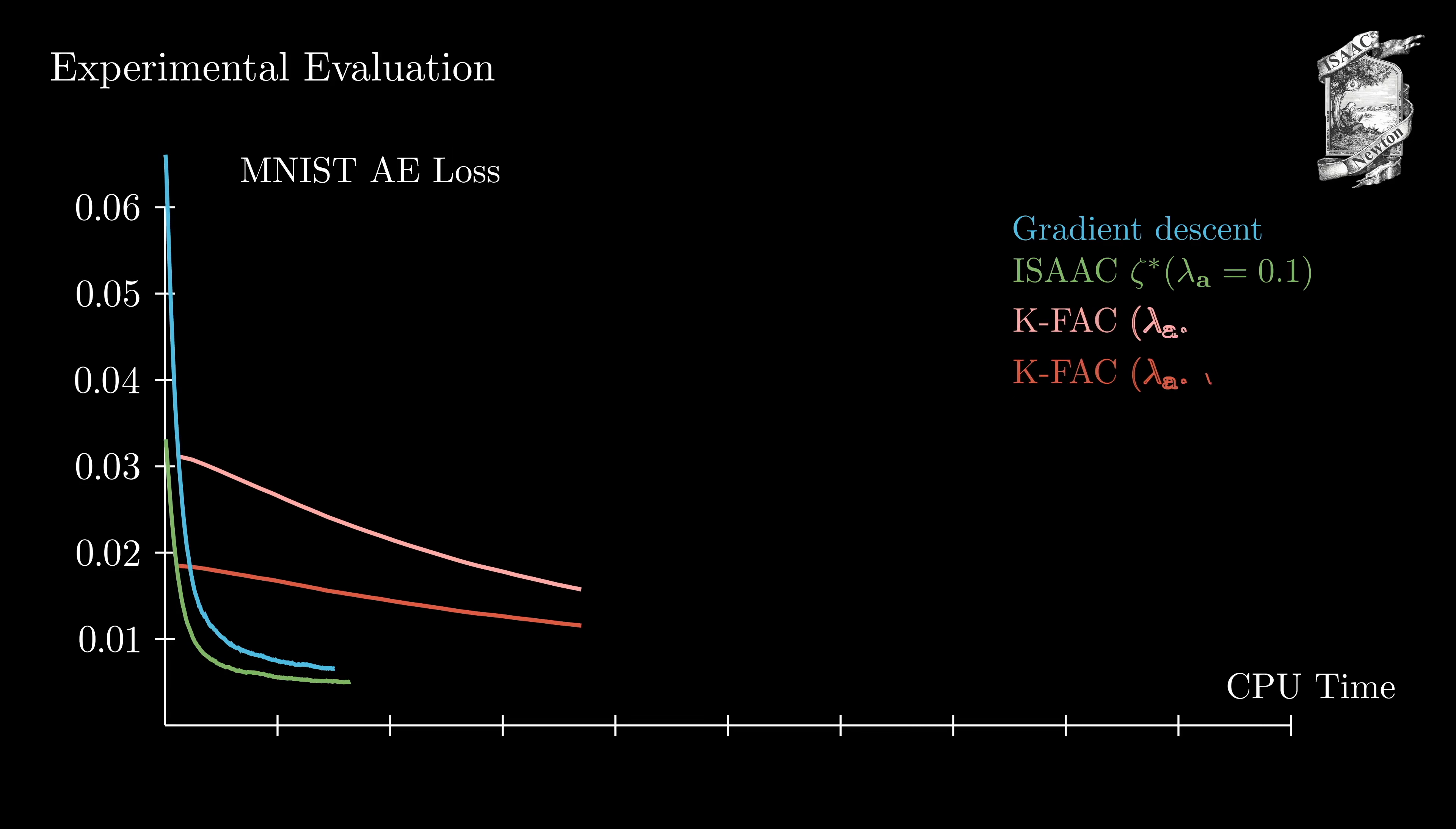Next, let's compare it to a full rank KFAC, which has substantially larger runtime extending beyond the scope of our plot. Finally, comparing to the zeta formulation, we can observe that ISAAC is substantially faster while reaching about the same final loss.